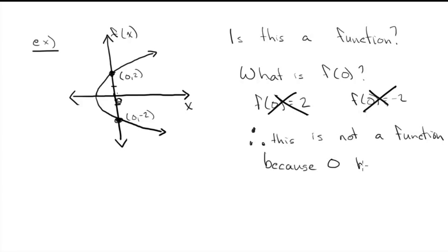Because 0 has two outputs. One of those outputs was 2, and one of them was -2. And 0 wasn't the only problem, right? Whatever this number is here, it has two outputs, one up here, one down here. So there's lots that have two.